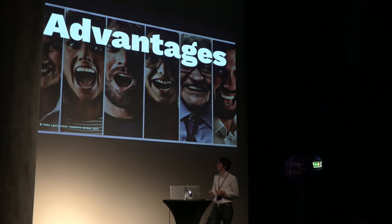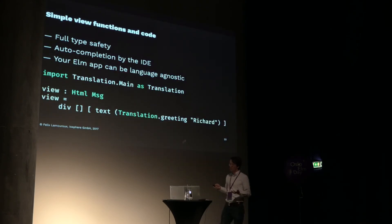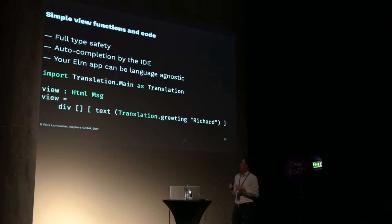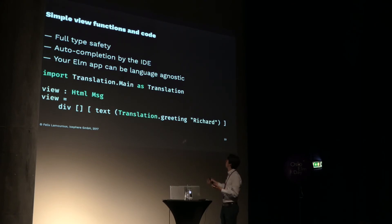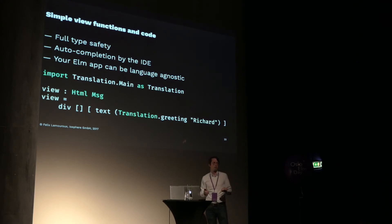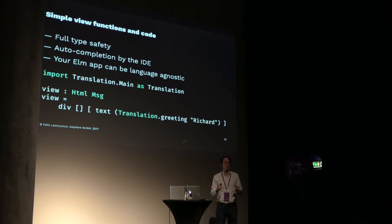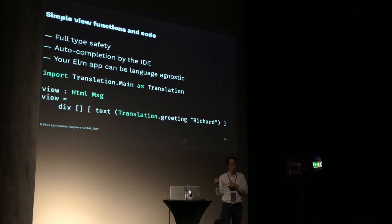So let's look at the advantages. First, it's really simple — other translation functions usually have huge switch-case statements, but here you have really simple functions to read and use. Your app can be language agnostic: the user's language doesn't appear in your app's code, you just have 'translation.greeting Richard' and that's it. It's also fully type safe, and depending on your IDE or editor you get auto-completion. With a JSON key-based lookup you have to check for typos in keys, but here if a key doesn't exist it simply doesn't compile.